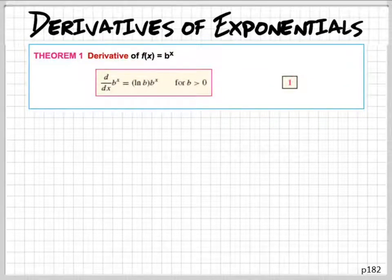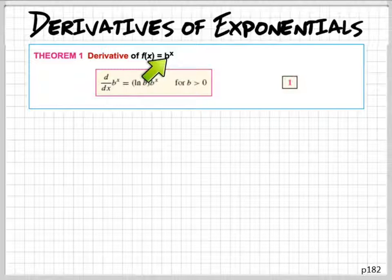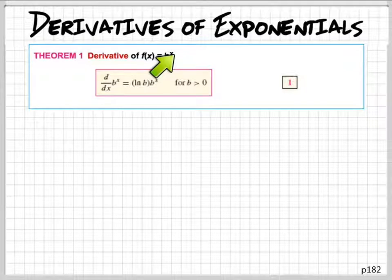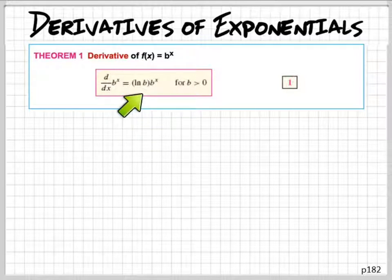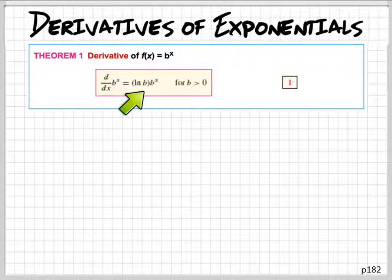This is the derivative of an exponential function. Whenever you have an exponential function, b just represents some base, some number, and the variable is in the exponent. You would use this. So to take the derivative of b to the x, we would use this formula. The formula is really nice. There's a workaround besides the formula, but it's not so nice.